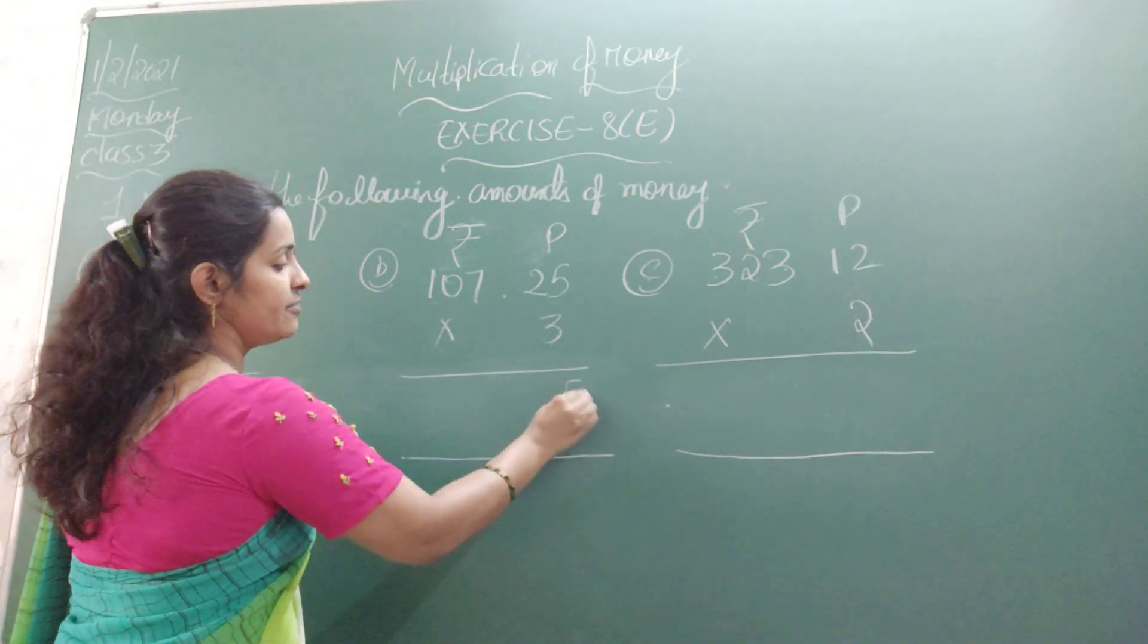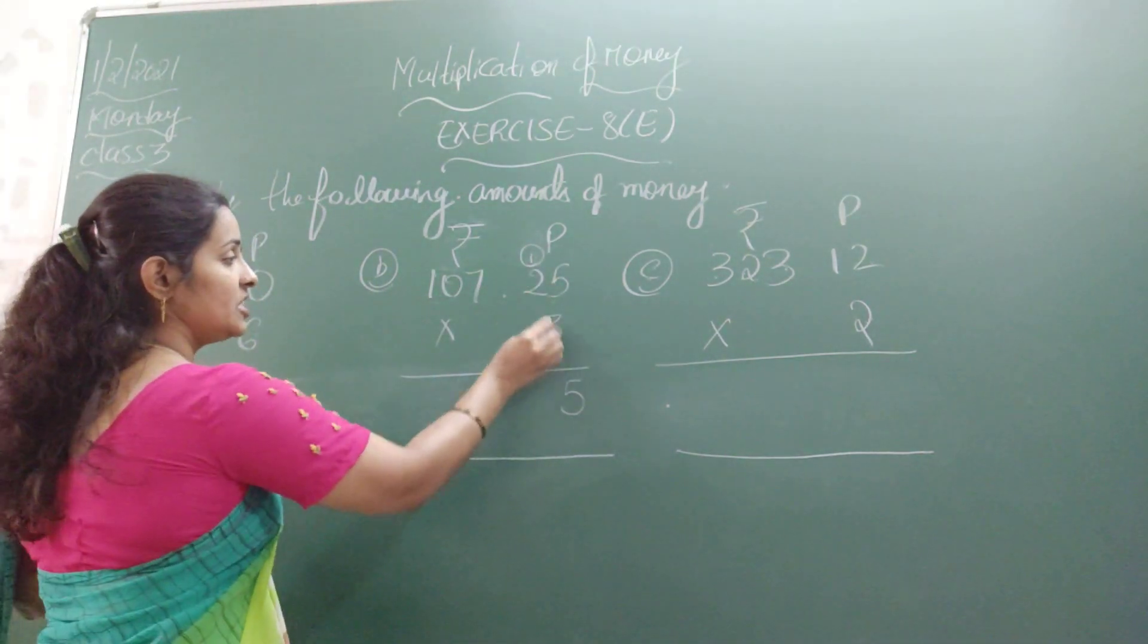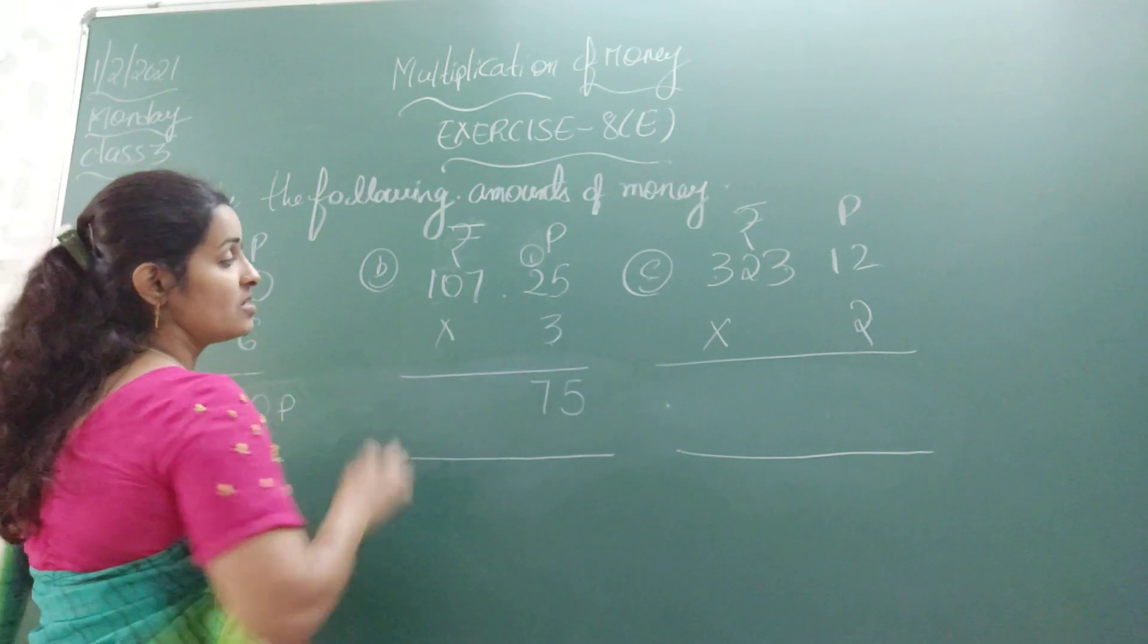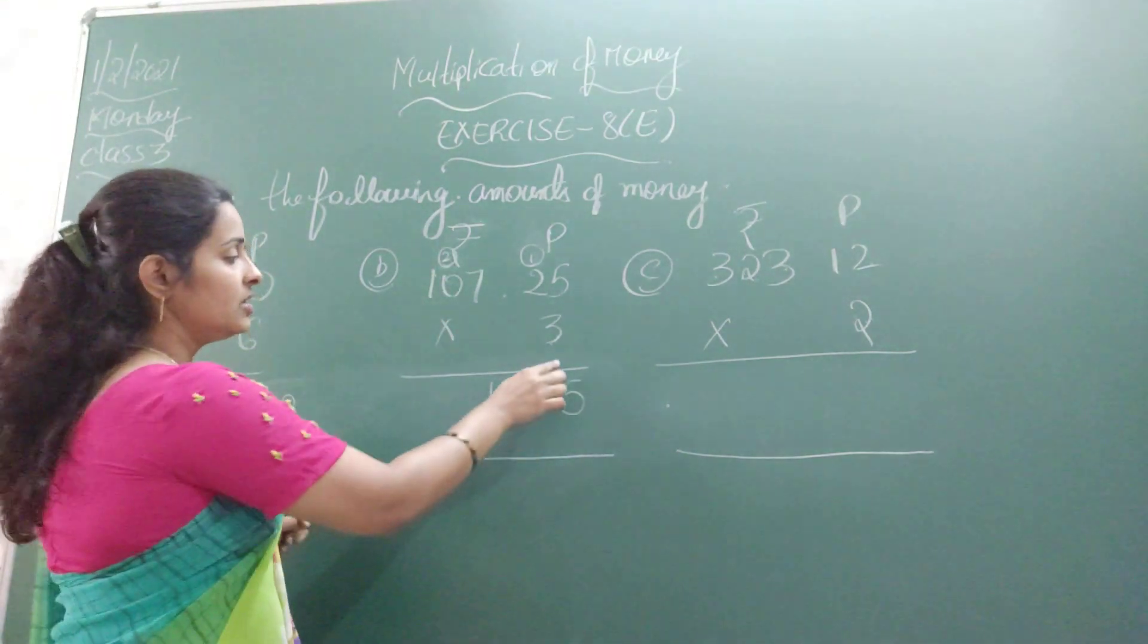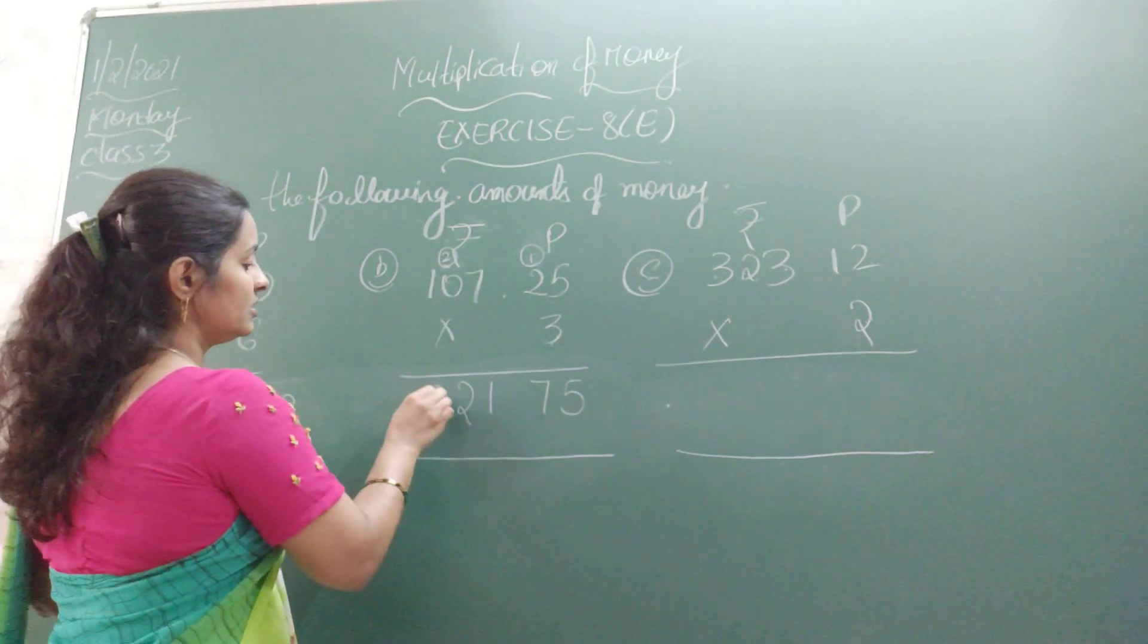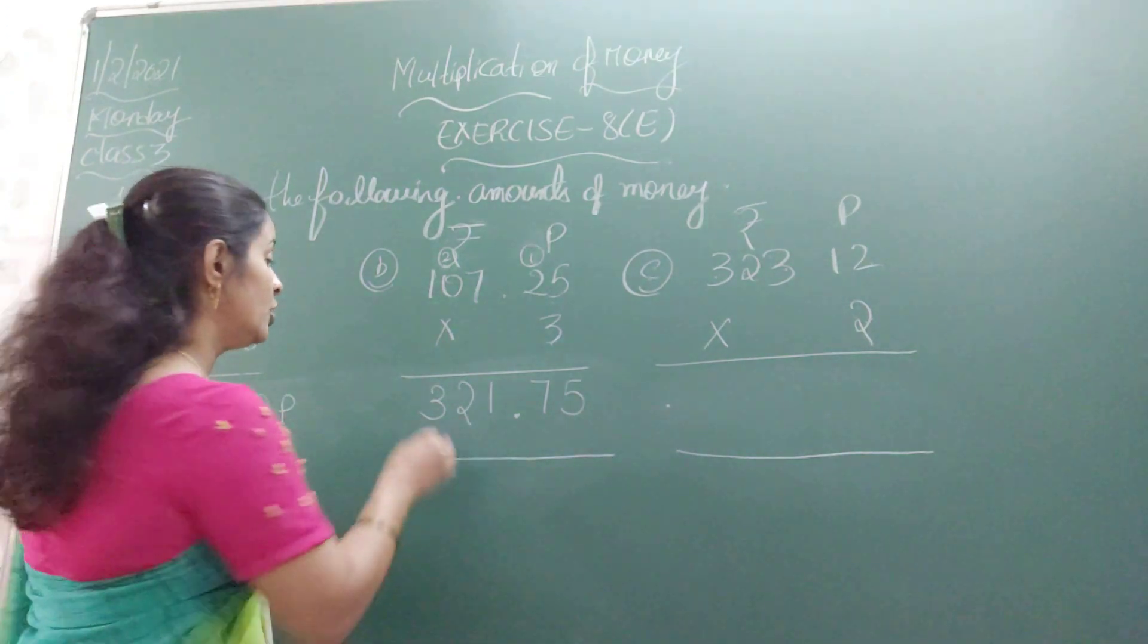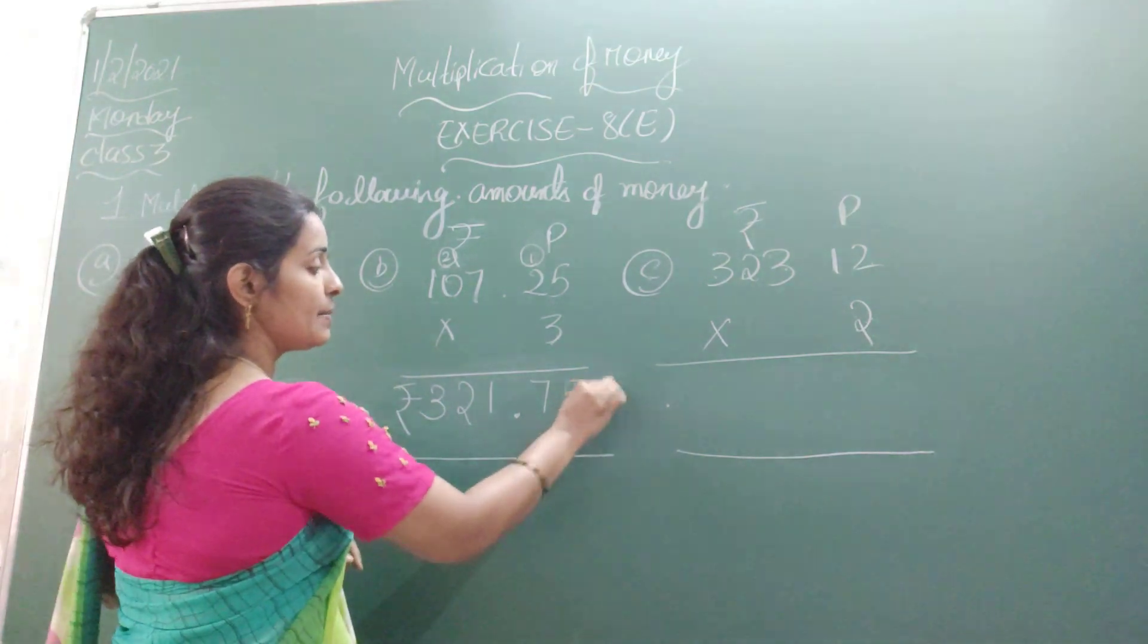3 fives are 15, write 5 and carry 1. 3 twos are 6, 6 plus 1 is 7. Next, 3 sevens are 21, write 1 and carry 2. 3 zeros are 0, 0 plus 2 is 2. 3 ones are 3. Where will you get the point? After 2 digits. That is 321 rupees and 75 paise.